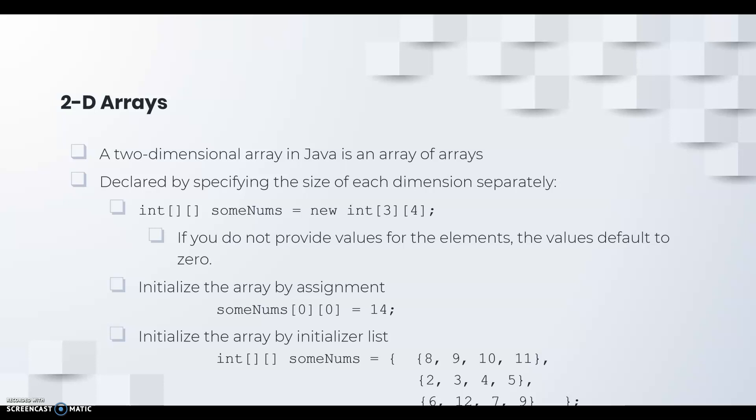If you do not provide values for the elements, the values default to zero. You can initialize the array via assignment. For example, right here we've got the value 14 that we're going to store in the sumnums 2D array at position row zero, column zero.